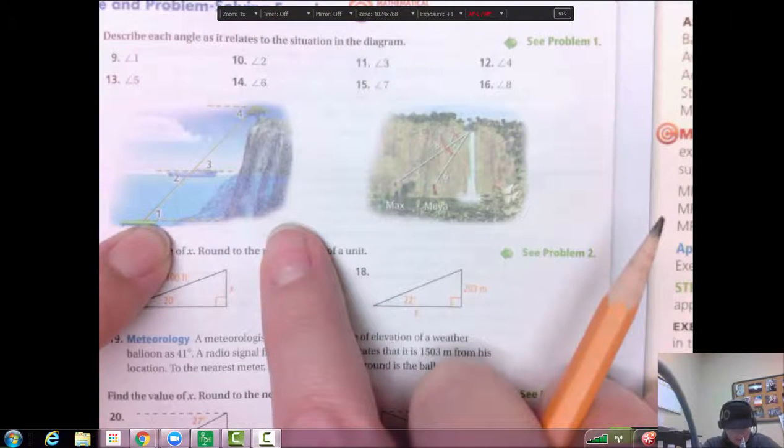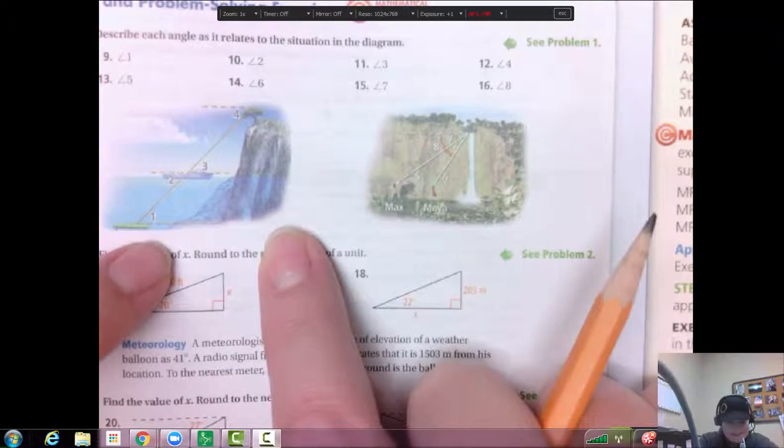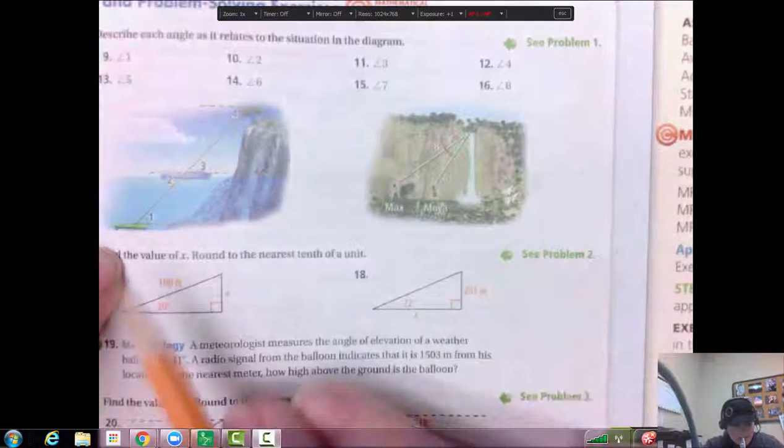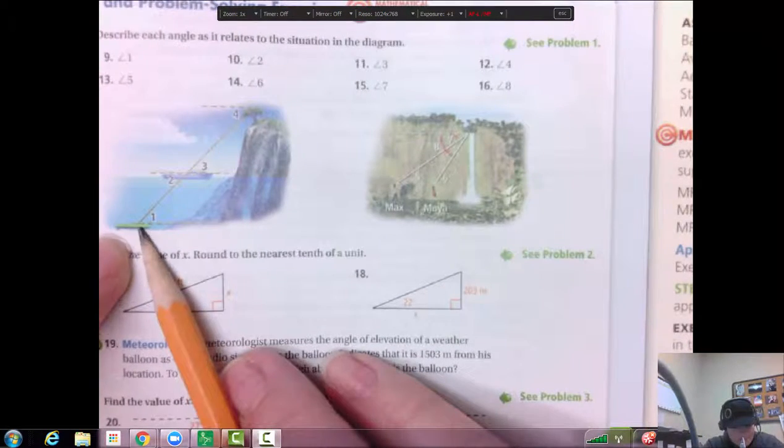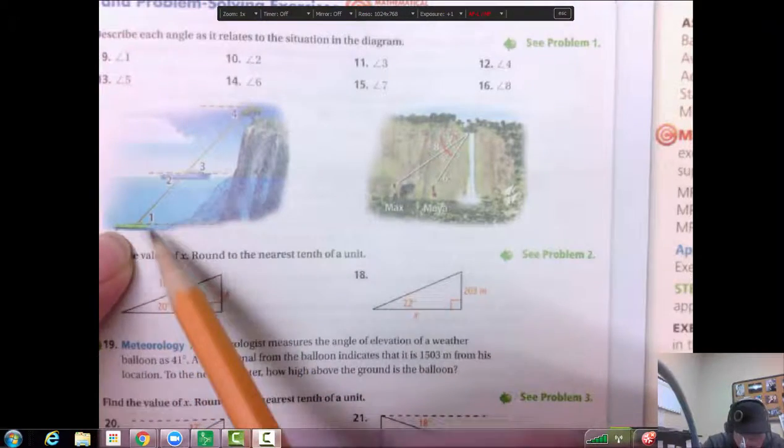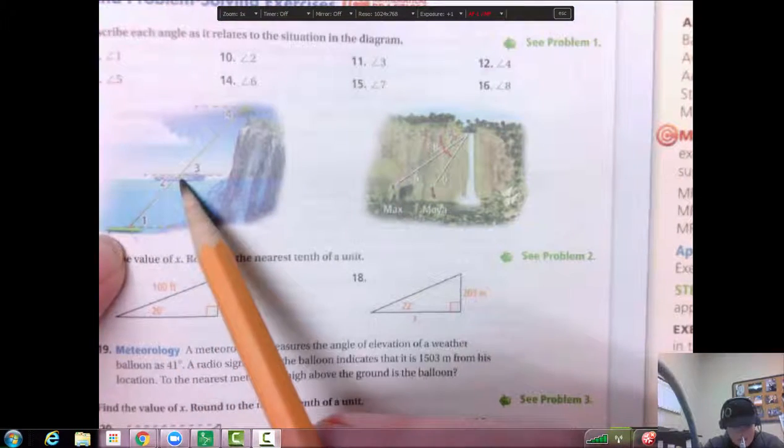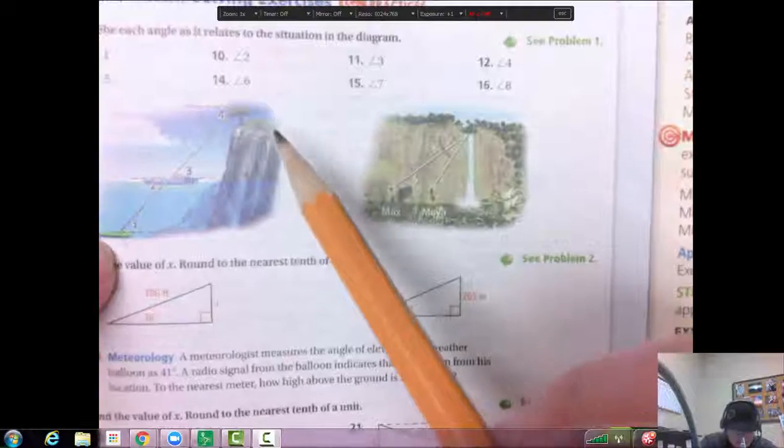So we're looking at angle one first. So when we look at angle one, is that an elevation or is it a depression? It's an elevation, and angle one is going from, what is that thing? I think they called it a submarine there. It doesn't quite look like one. So it's going from the submarine towards the boat there. So you would say that's an angle of elevation from the submarine to the boat.